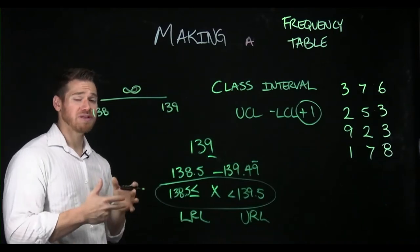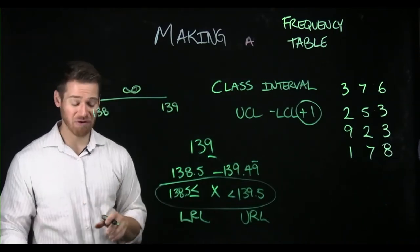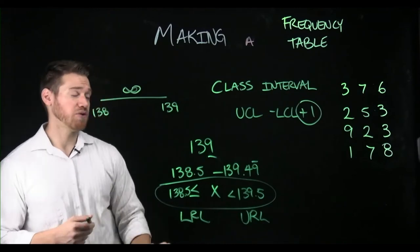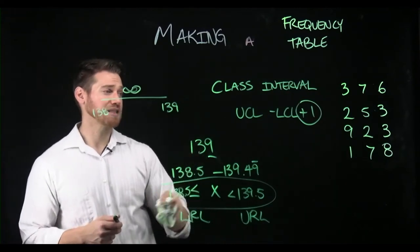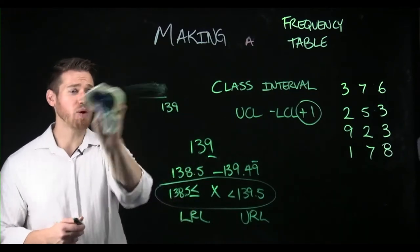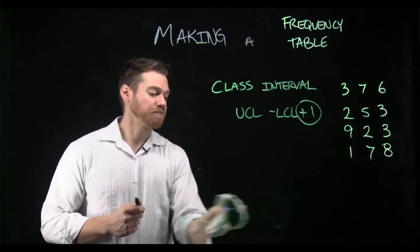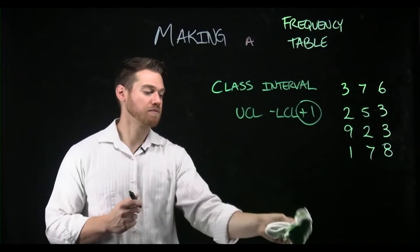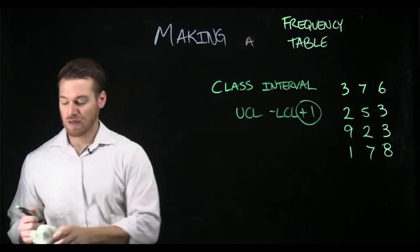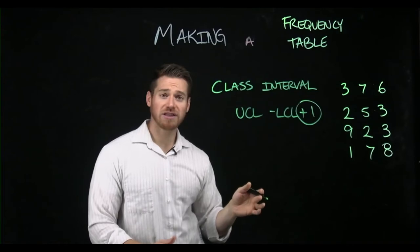What we're really doing is getting the interval that represents that, but the easier way to remember it is simply to note that when you do the upper class limit minus the lower class limit, if you add one that gets you what you're looking for for the class interval.